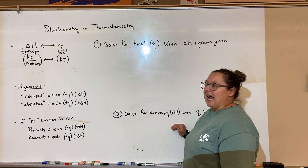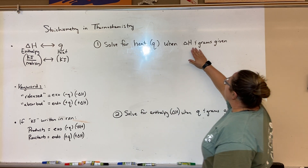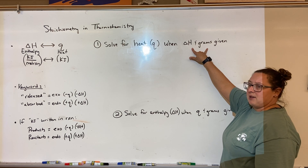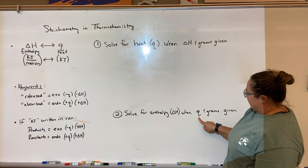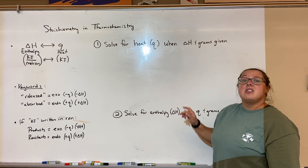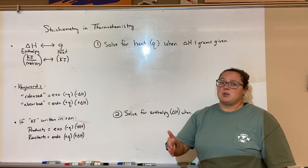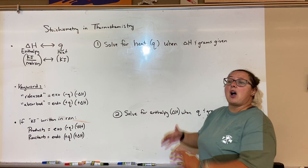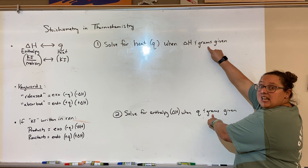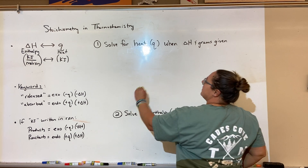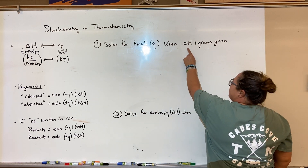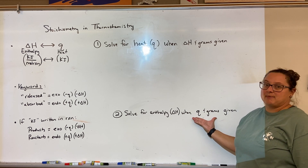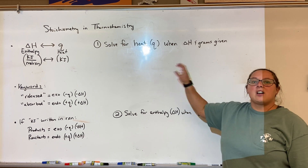There are two things we're going to be able to do today. First, we're going to solve for heat q when given grams and ΔH. The way I know to use the stoichiometry approach is whenever you are given grams and either ΔH or q and you're trying to find the opposite. Second, we're going to solve for enthalpy ΔH given q and grams.